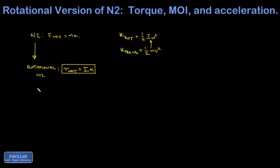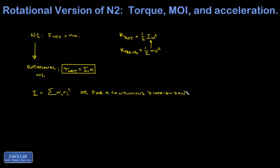Just a little reminder: the moment of inertia I is given by — for a distribution of point masses — you take each of those masses and multiply it by how far it is from the center of rotation squared. So the choice of your rotation axis actually changes the moment of inertia. For a continuous distribution, such as a uniform rod rotated about one end or the center, a hollow sphere, a solid ball, or a solid cylinder, we just look up the formulas, which are derived using calculus.